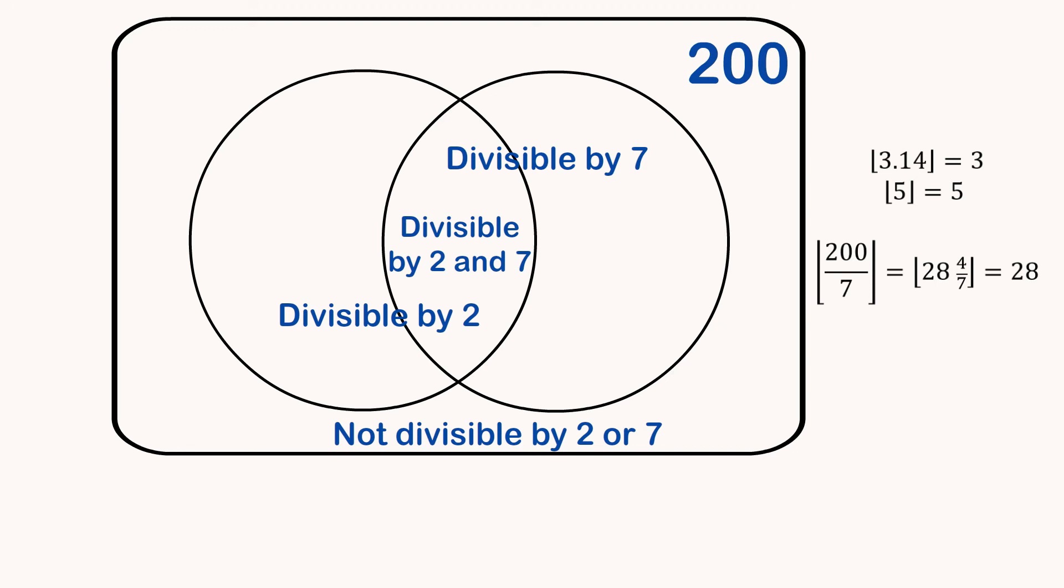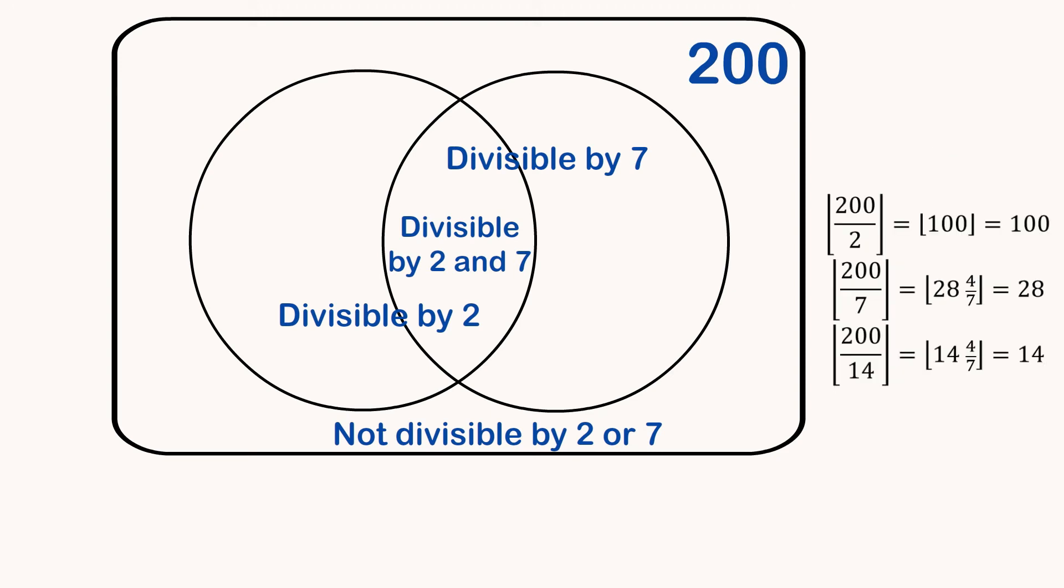We just go down until we hit an integer and we get 3. The floor of 5, for example, is just the number 5. In the case of the numbers between 1 and 200 that are divisible by 2, we just take 200 divided by 2 and take the floor.